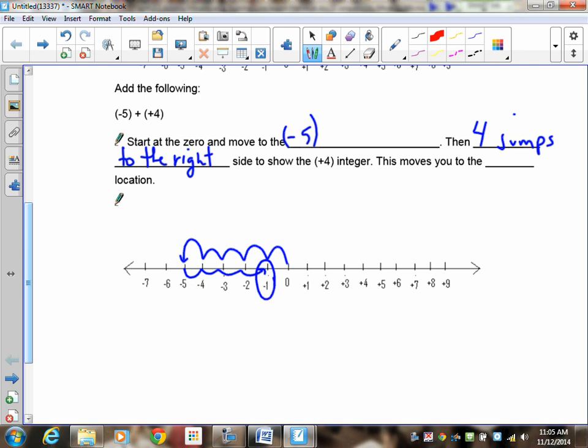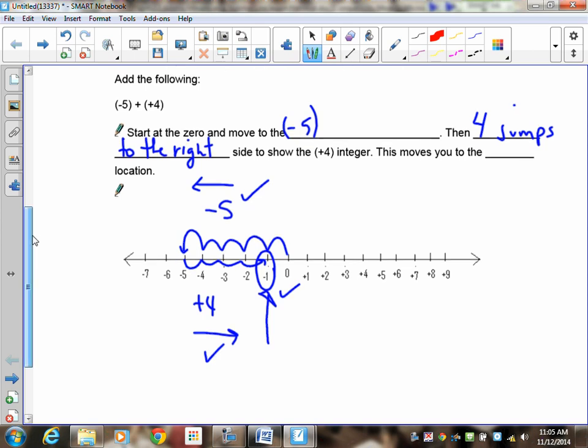Now where I ended up, I'm going to circle it, because that's my answer. So here was the negative 5. I went 5 to the negative side. Here is my positive 4. I went 4 to the positive side, and I ended up right here. There's your answer. So how do I mark this? Well, negative, positive, and your answer. It's very straightforward.